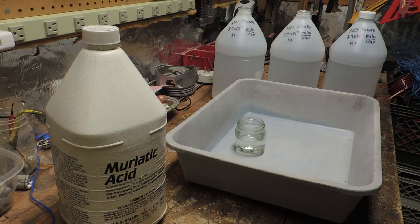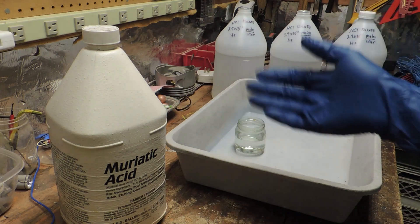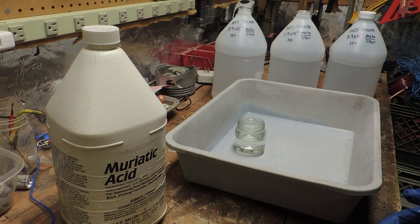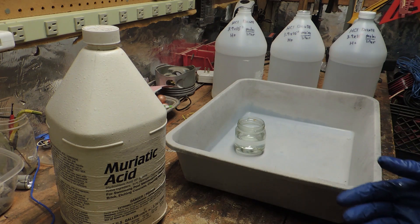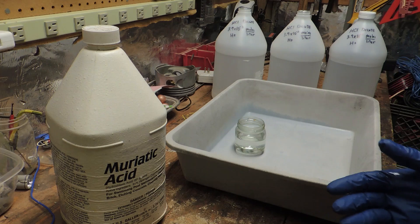In this video I'm going to show you how to take common muriatic acid that you get at the home store and then dilute it down to the same hydrogen ion concentration or acidity as common vinegar that you could get anywhere.